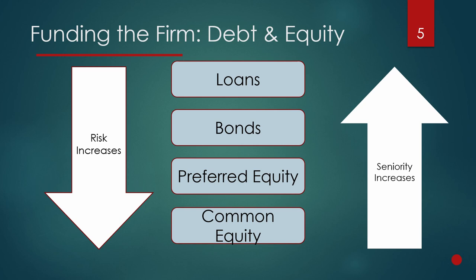As equity holders get the largest payoff if the business is a massive success, its value will increase a lot and the value of the stock will rise. They will inevitably face the higher risk. The investor owns a portion of the business and if it fails, they get paid back last, if there's anything left.